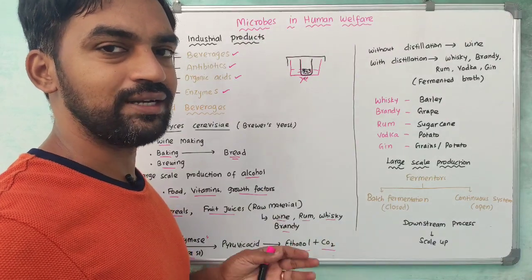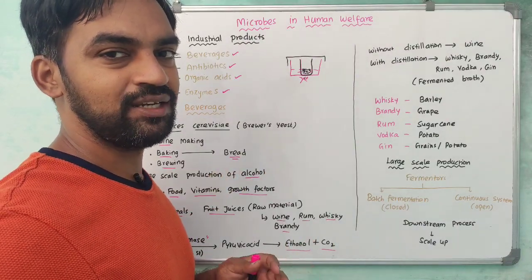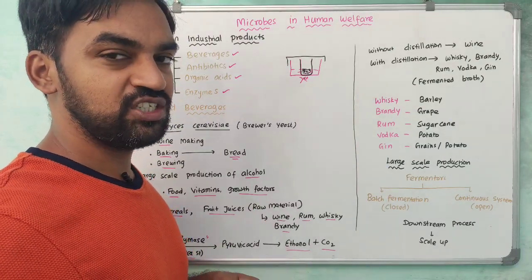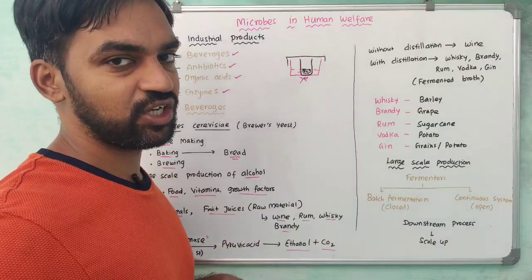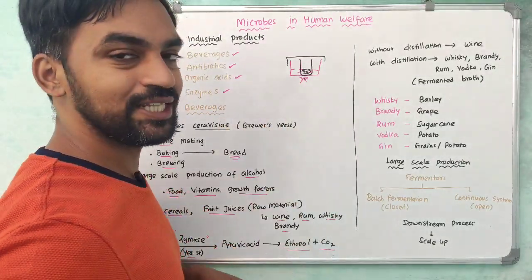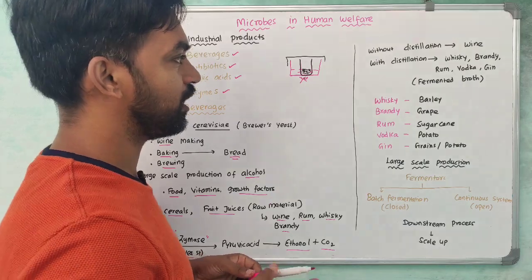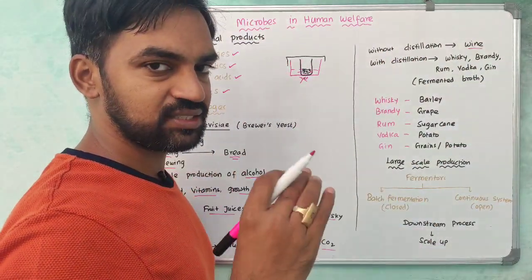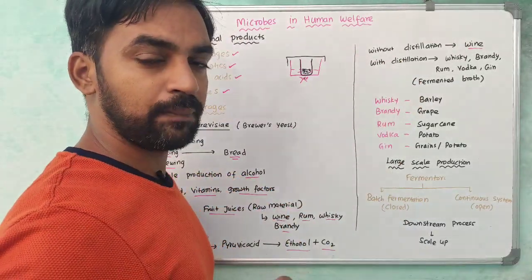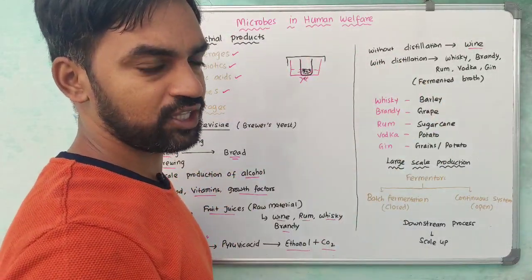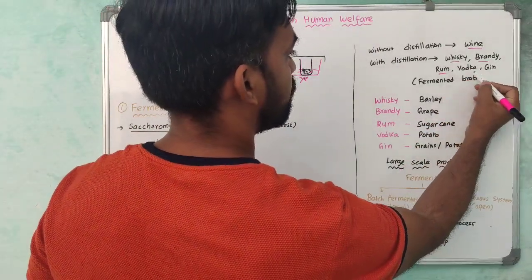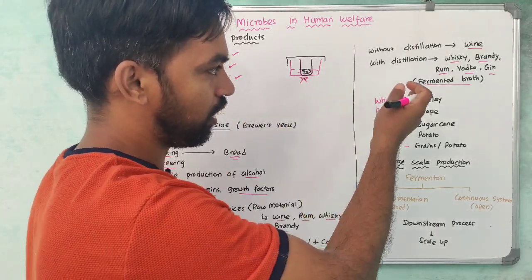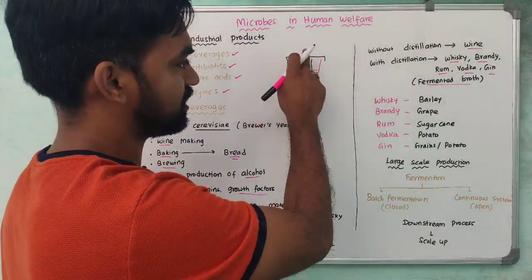Alcohol content varies by beverage. In normal wine and beer, there is only about 13% alcohol. But gin and brandy can be made up to 80% alcohol through the distillation process. Whisky, brandy, rum, vodka, and gin are distilled alcoholic beverages produced by distilling the fermented broth.